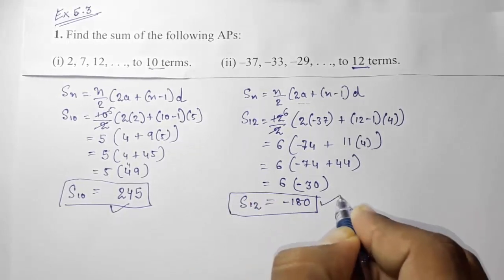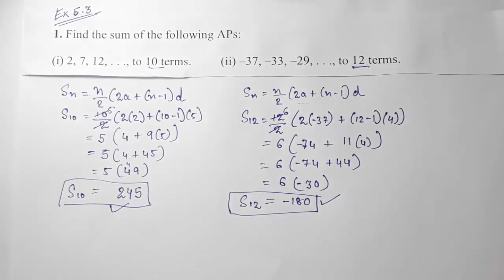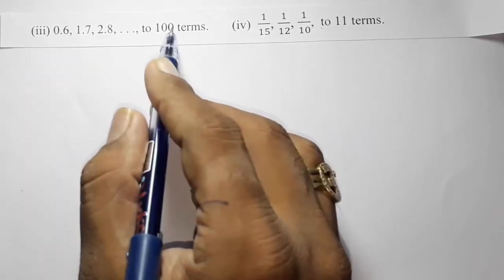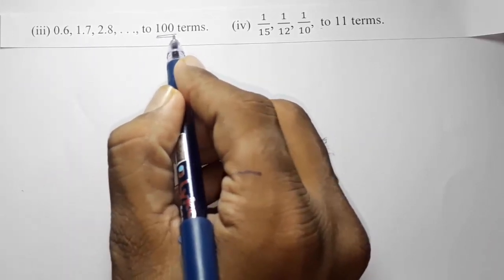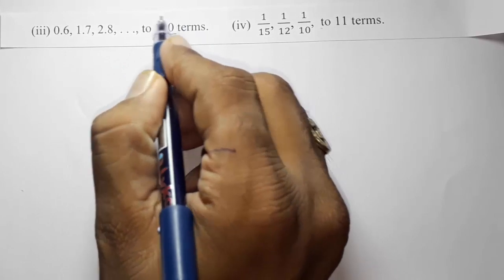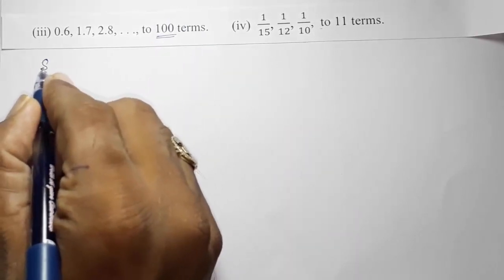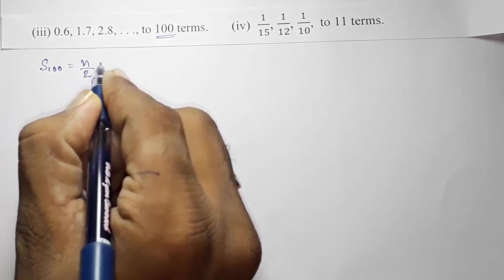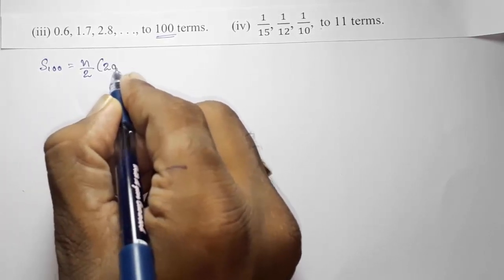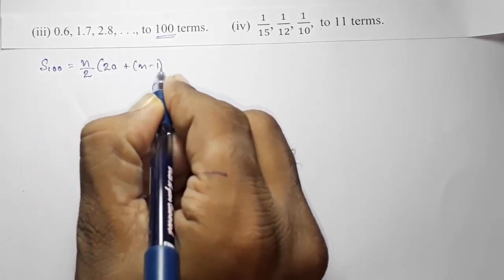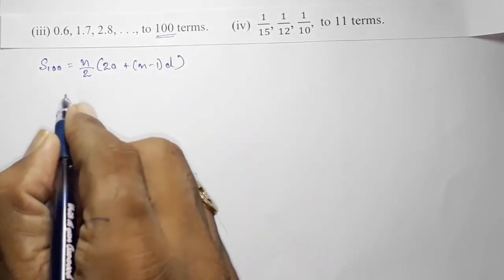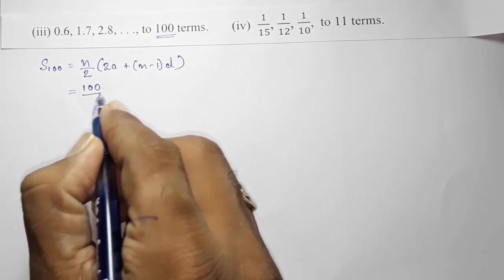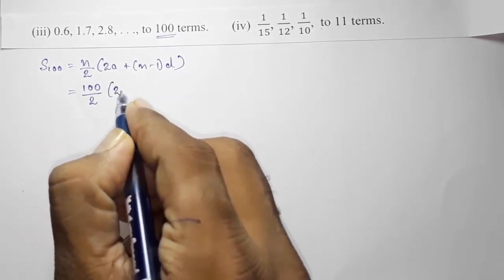Moving to Question 3. We have 100 terms, so we need to find S100. Using the same formula: S100 = 100/2 × (2a + (n−1) × d). Now we put the values in one by one.